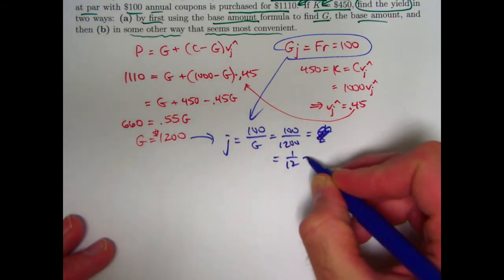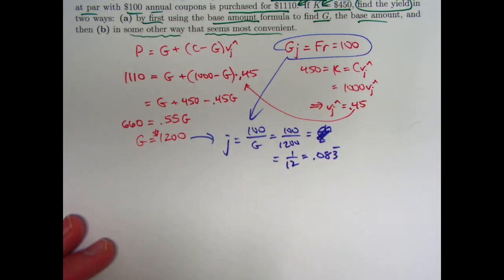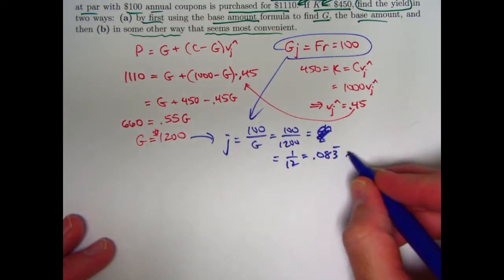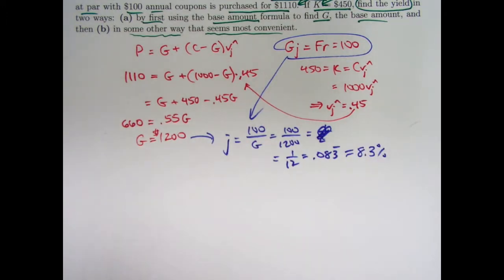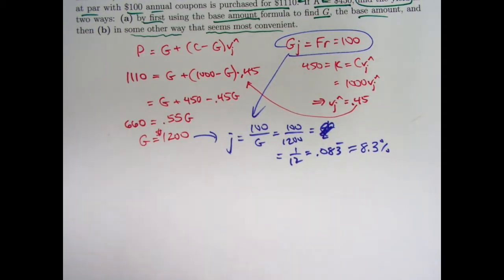And if you convert that to a decimal, that is 0.083 repeating. So about 8.3% is the yield rate. So with these givens, the base amount formula is certainly fairly convenient to figure out the yield rate. What other way could be used here?